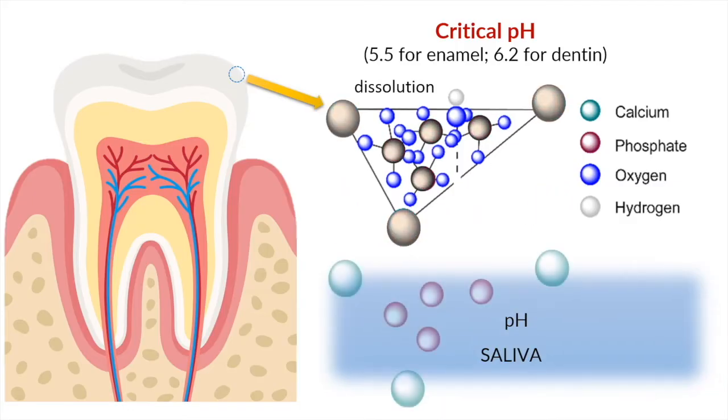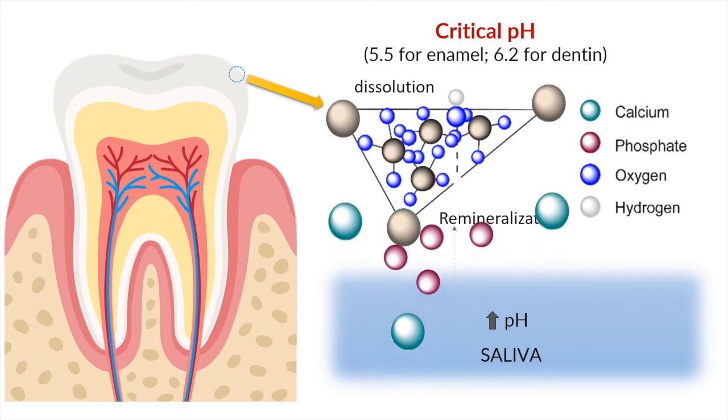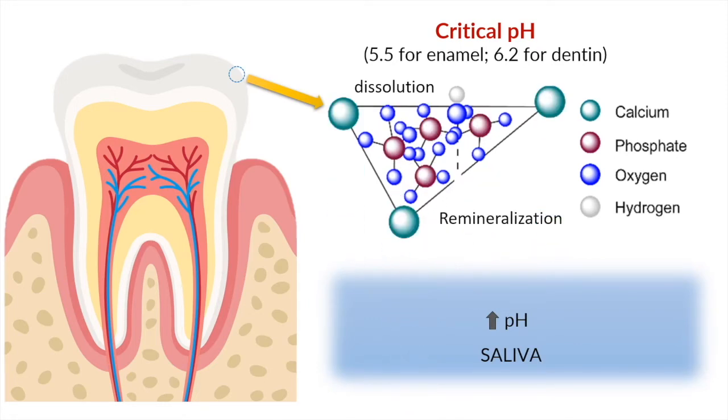When the salivary pH is restored as a compensatory mechanism and the pH increases, remineralization occurs. The calcium and phosphate ions from the saliva enter into the hydroxyapatite crystals, wherein they are bound by the hydroxyl groups.